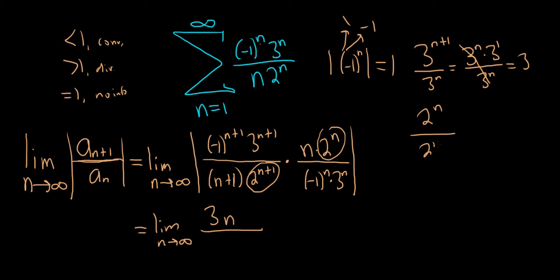Except this time on the bottom, we break it up as 2 to the n times 2 to the 1. And then they cancel. So we're left with 1 over 2. So we're left with a 2 on the bottom, and also an n plus 1.